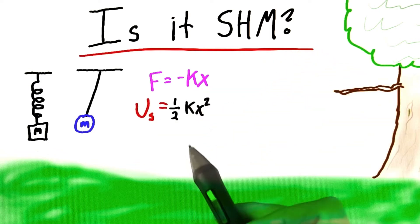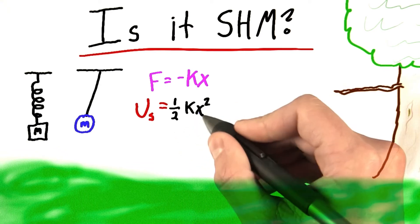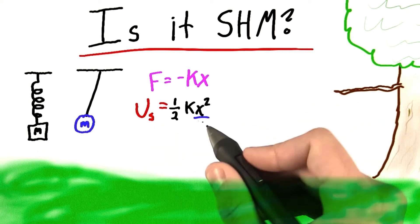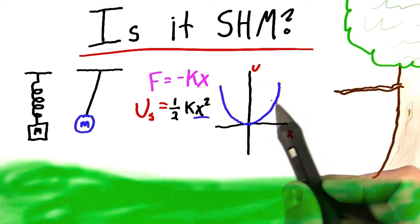Well, for a spring, the potential energy was equal to 1 half k times the displacement squared. And it's this term, the displacement squared, that I want to talk about. Because we see that if we plot this, potential energy versus displacement, we get this lovely parabola.